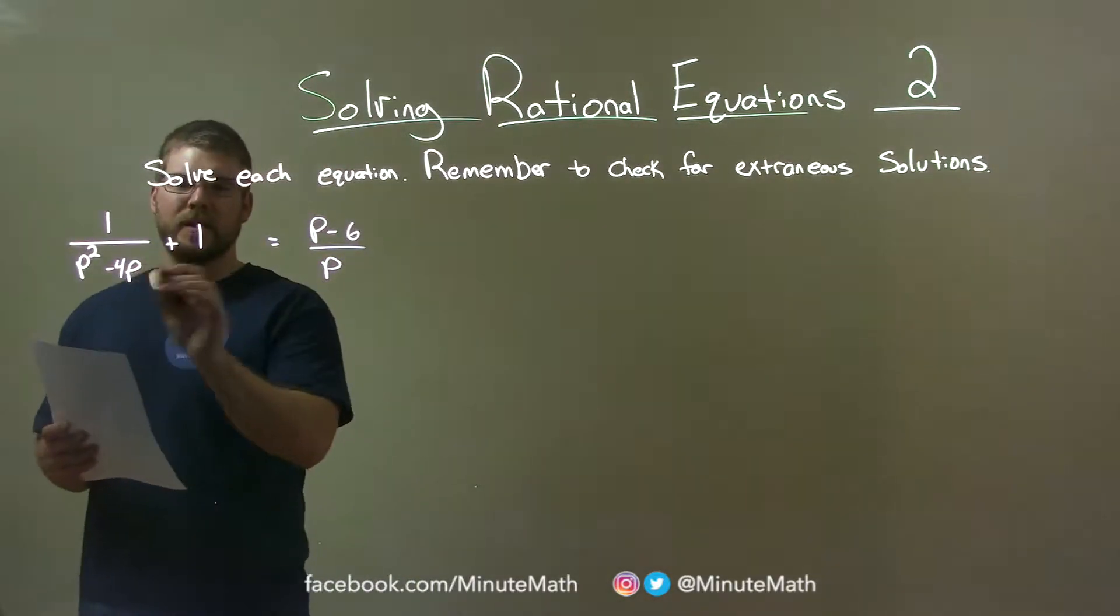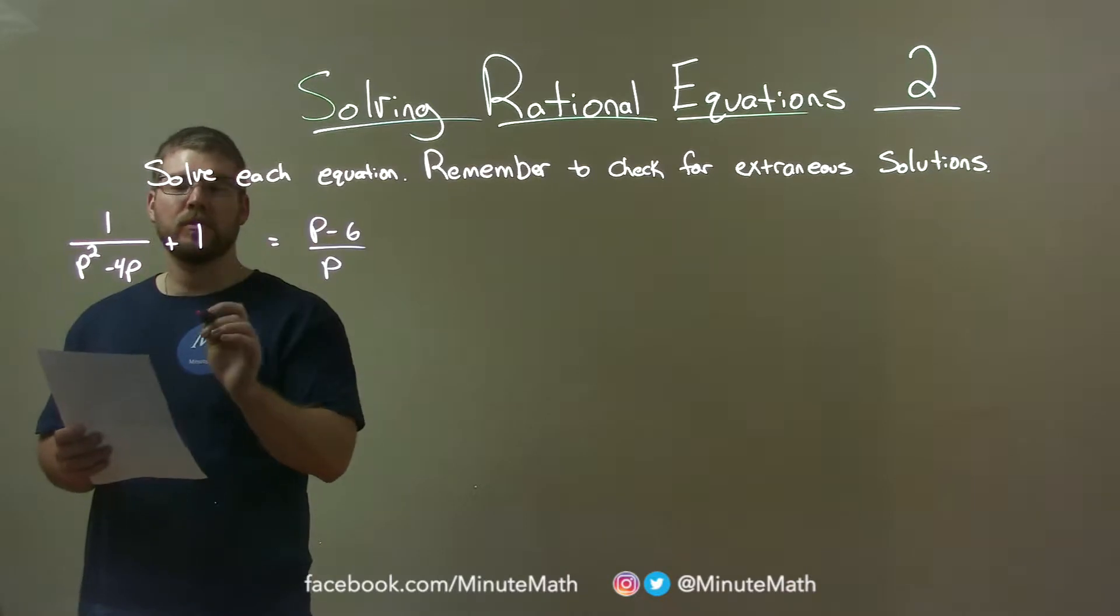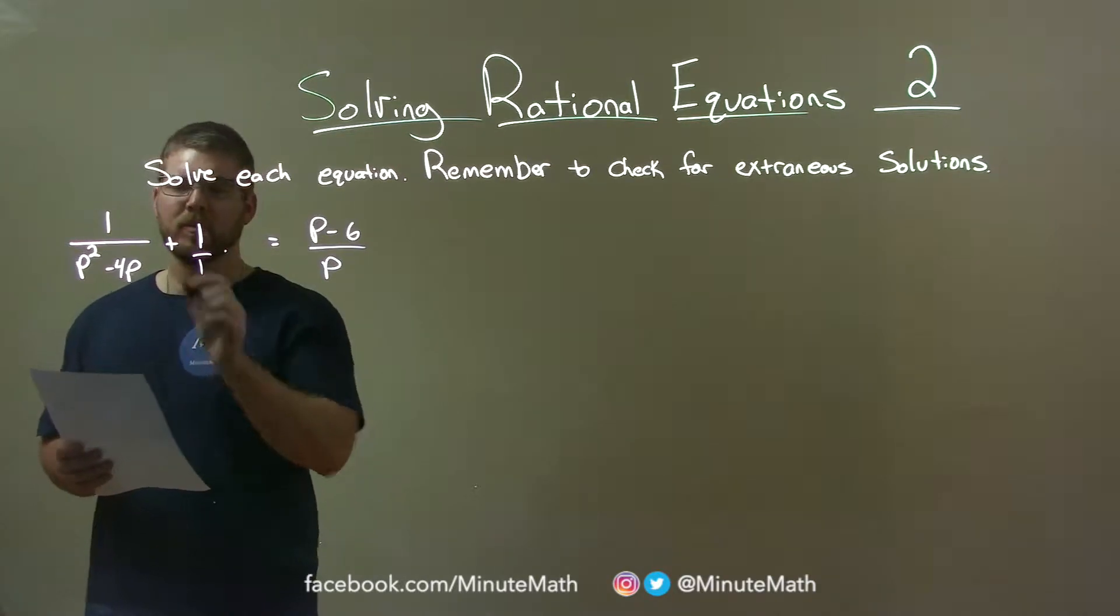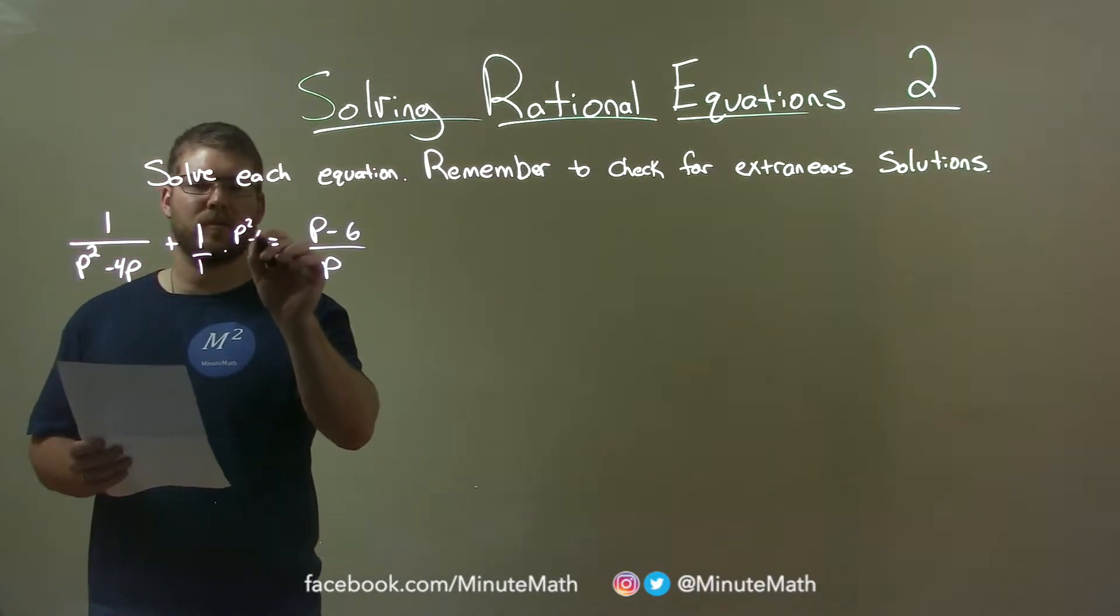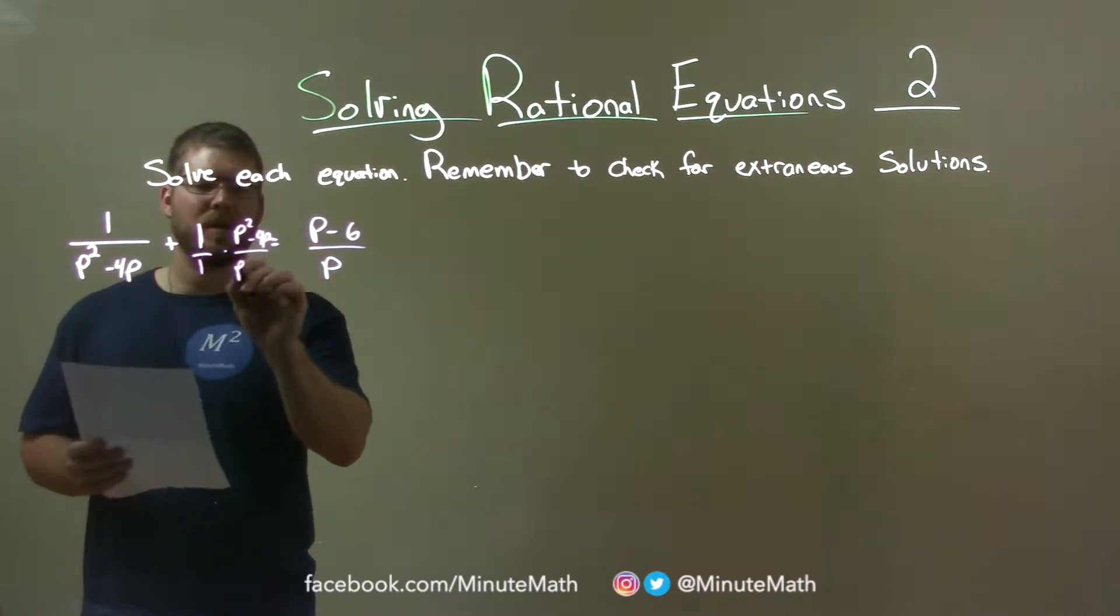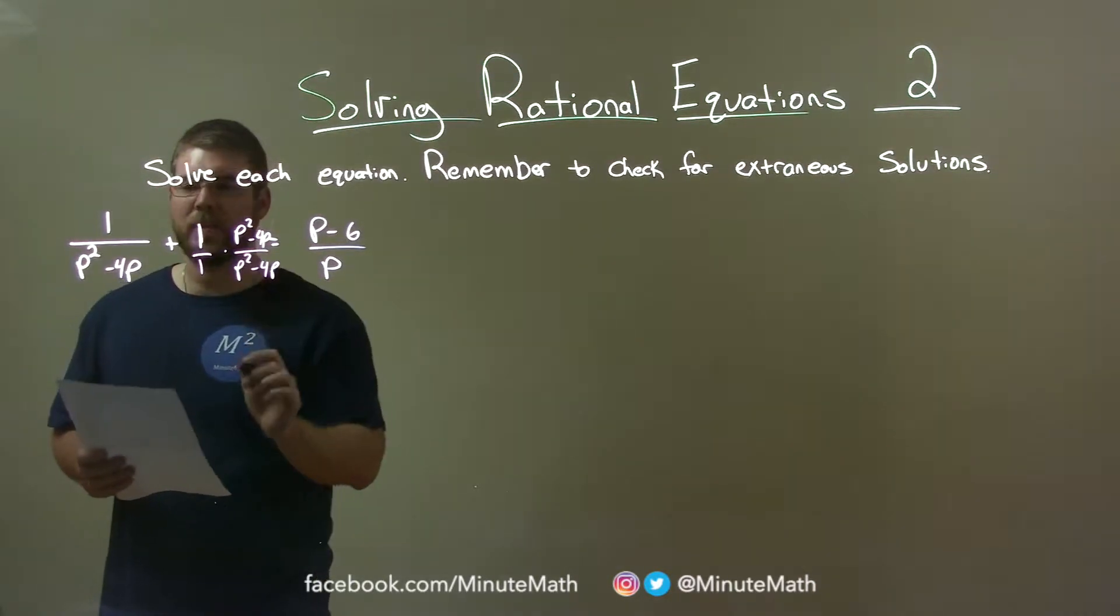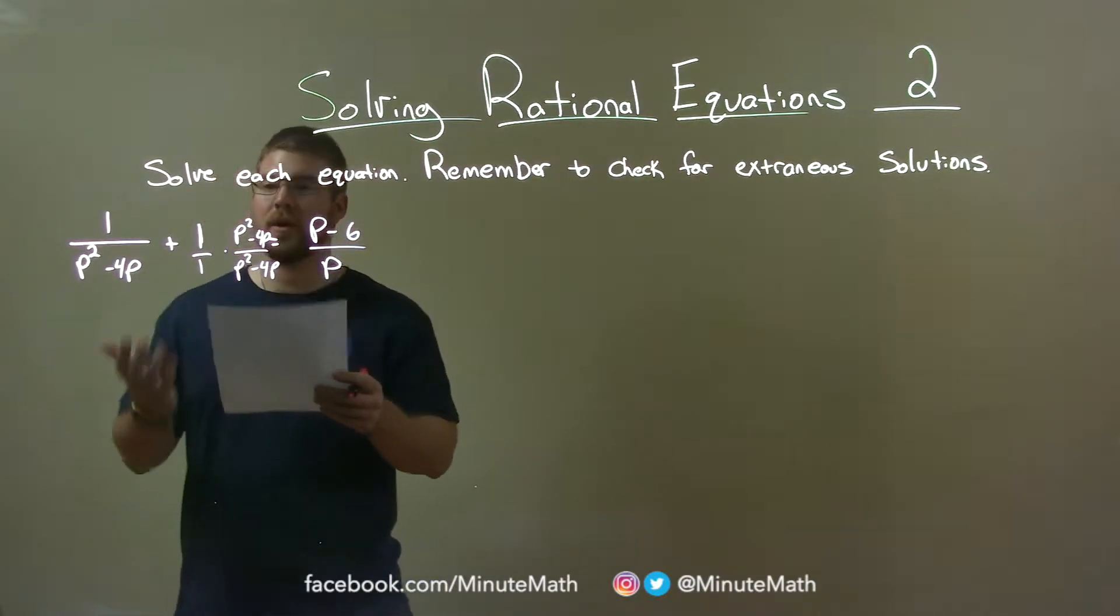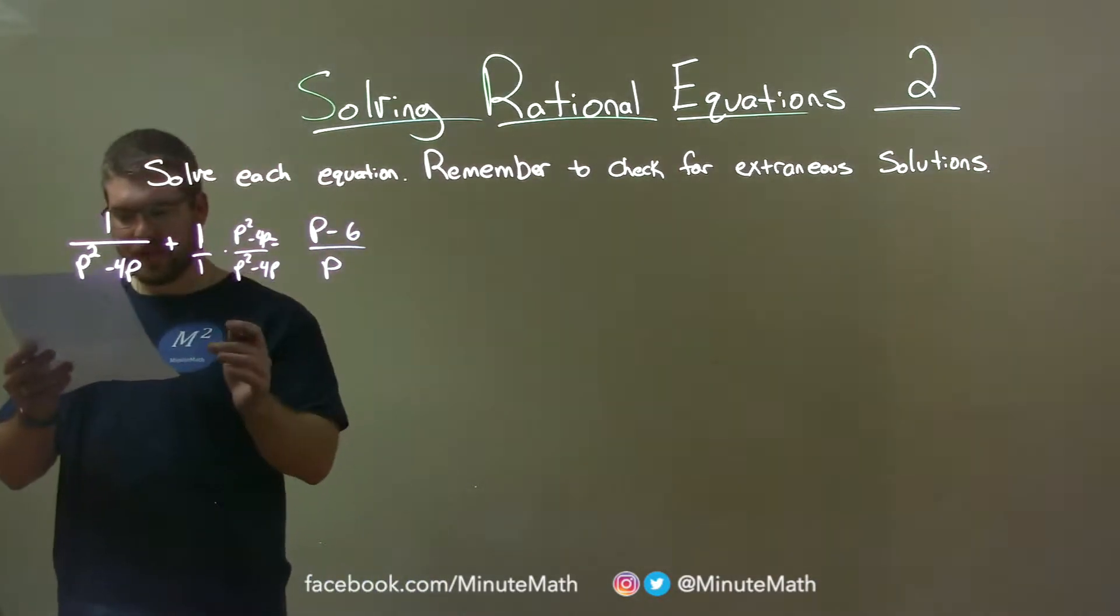Well, first thing I'm looking at here, I want to combine these two. So to do that, I need to have a common denominator. So what I'm going to do is this 1 is really 1 over 1 and we're going to multiply it. And I'm going to multiply it by this denominator over itself, p squared minus 4p.